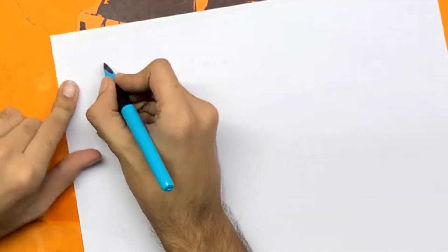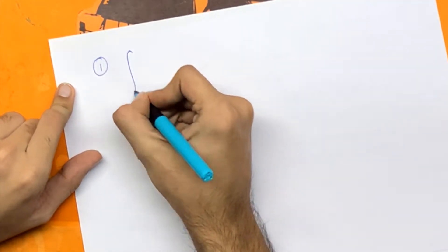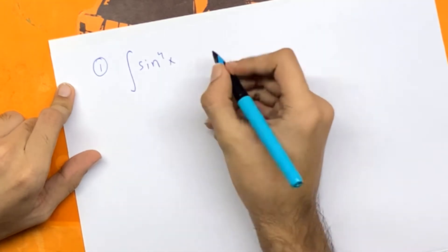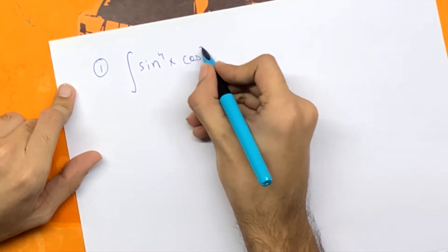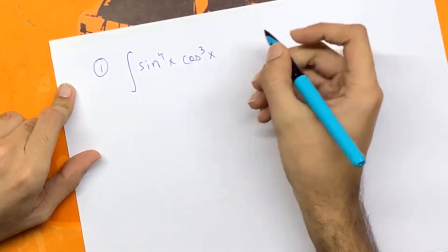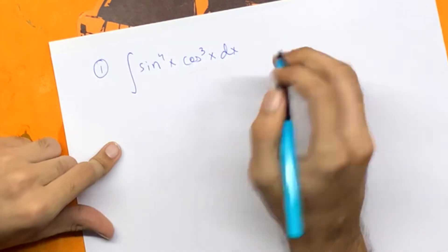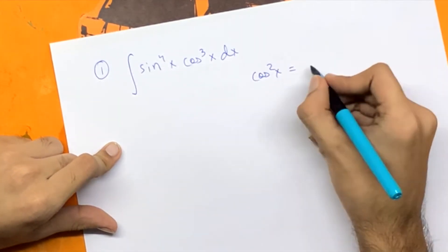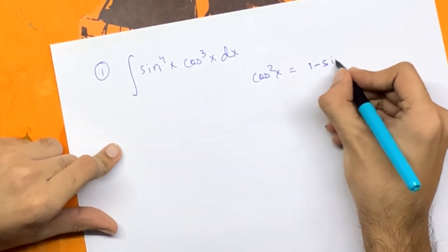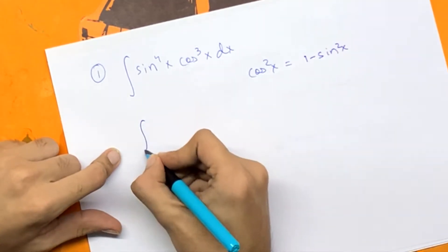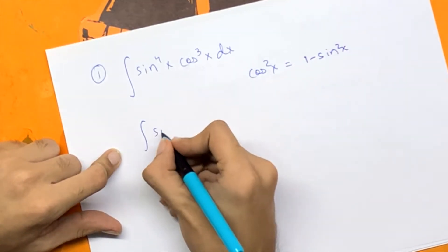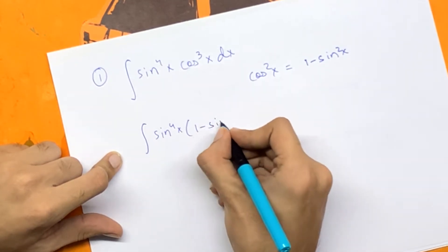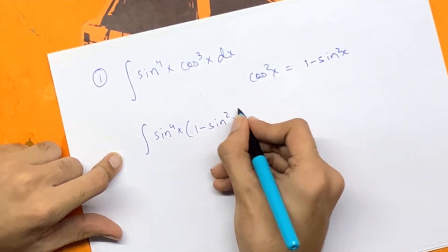Question number one is the integral of sin to the power 4x times cos cube x dx. We can write cos square x as 1 minus sin square x. So substituting that in, we have sin to the 4x times 1 minus sin square x times cos x dx.